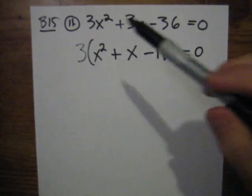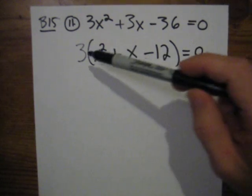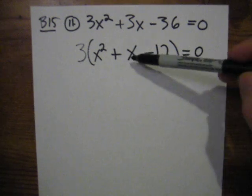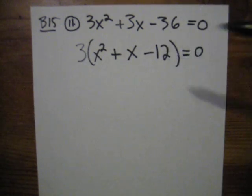I ask myself if I factor out of 3 of each of those terms, what would I be left with? Factor of 3 out of 3x squared, you get x squared. Factor of 3 out of 3x, you get x. Factor of 3 out of 36, you get 12. It stays negative.